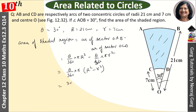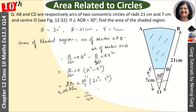Putting in the values: 30 upon 360 into 22 upon 7, with R = 21 and r = 7. After cancellation, we get 11 upon 6 into 42, giving us 21 squared = 441 minus 49. Solving this, the answer is 308 upon 3 cm squared. This is our area of the shaded region.